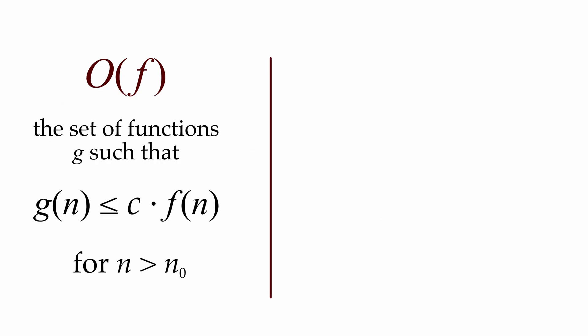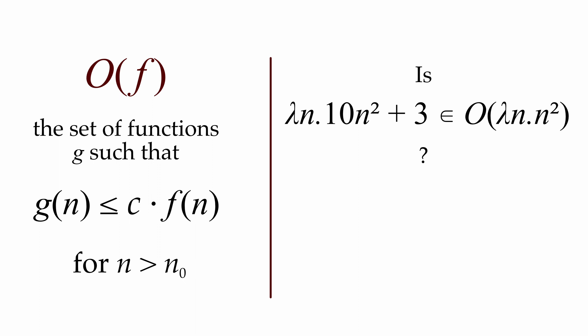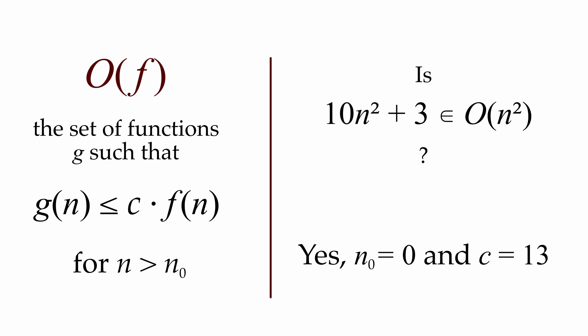To take an example, is the function from n to 10n² + 3 in big O of the function from n to n²? To show that the answer is yes, we just need to find values for c and n₀ so that for all values of n larger than n₀, 10n² + 3 ≤ c·n². It turns out that's true when n₀ is 0 and c is 13: for all positive values n, 10n² + 3 ≤ 13n². Often when writing formulations in big O notation, we'll use the body of a function when what we really mean is the function itself — so we can write 10n² + 3 is in big O of n².